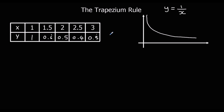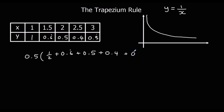Now we apply the trapezium rule. The width of each trapezium is 0.5, so we put 0.5 outside the bracket, half the first value, add all the ones in the middle, and half the last one. Typing that into the calculator gives an answer of 67/60, or to three significant figures, 1.12.